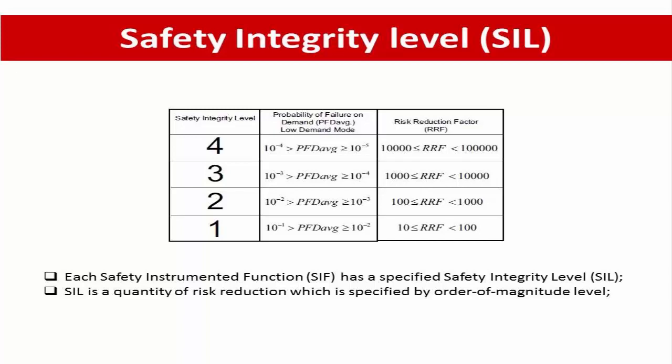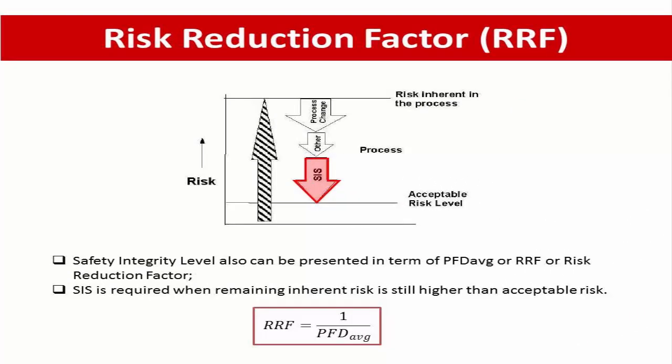What is the risk reduction factor? From the table, the Safety Integrity Level can be expressed in the form of PFD average, or probability of failure on demand, or risk reduction factor. Risk reduction factor is easier to understand: in an industrial plant there are inherent risks — sometimes that risk is acceptable, but sometimes the risk is unacceptably high and a lower level is required. Existing safeguard layers help, but in some cases the remaining risk is still higher than the acceptable risk level.